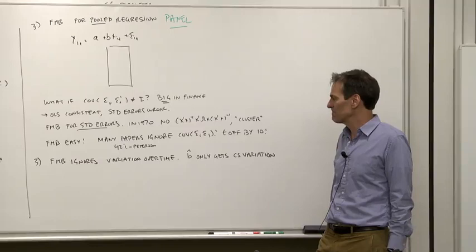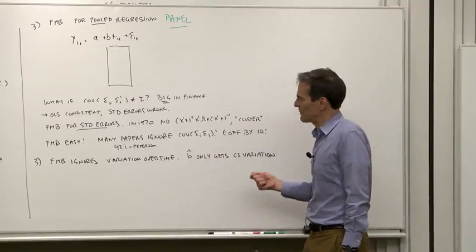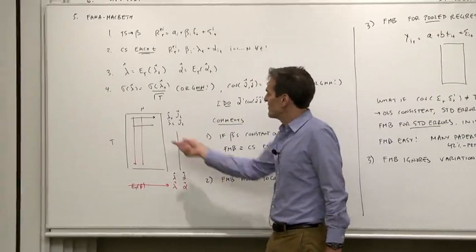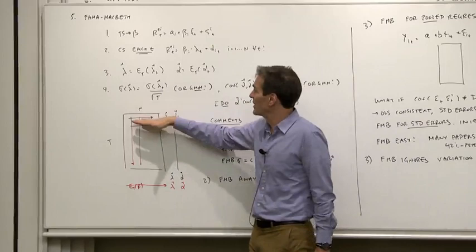The one danger of the Fama-Macbeth procedure is that it ignores variation over time. The only place it learns about the regression coefficient is from cross-sectional variation. You can see that from how we did things. If all the observations were the same cross-sectionally, but varied over time, then you couldn't estimate this regression.